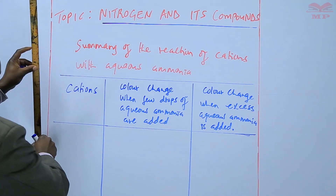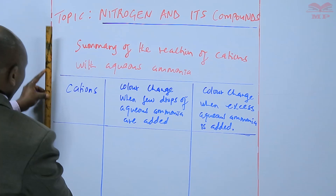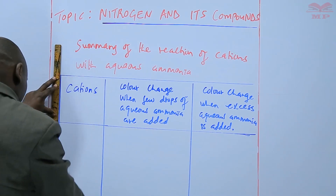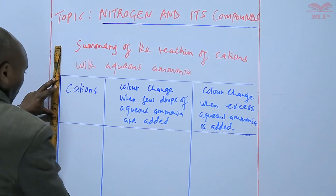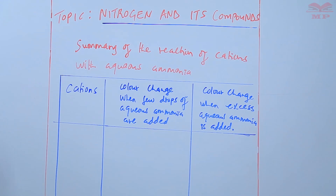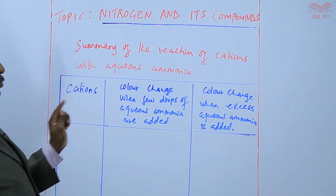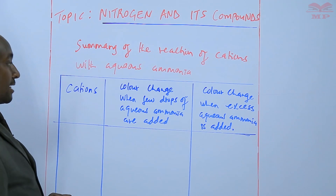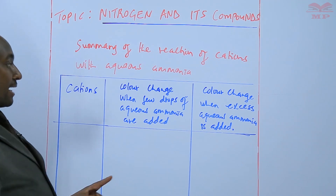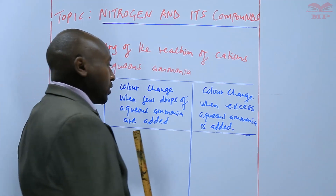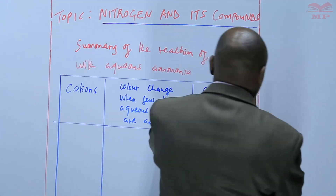We'll summarize this in the form of a table, with one column for the cations, one for the color change when a few drops of aqueous ammonia are added, and one for the color change when excess aqueous ammonia is added.